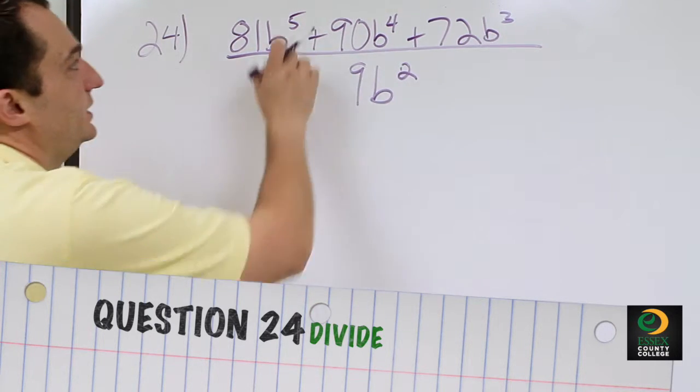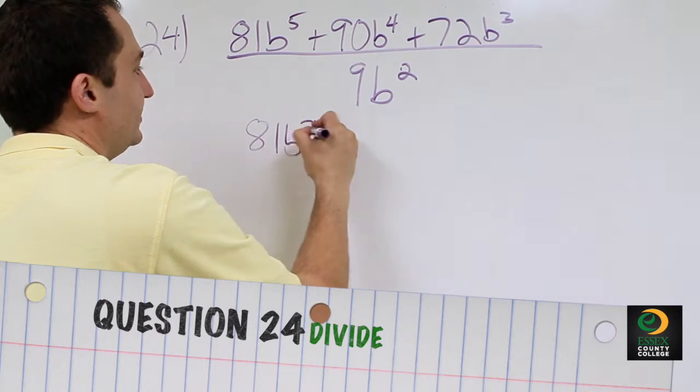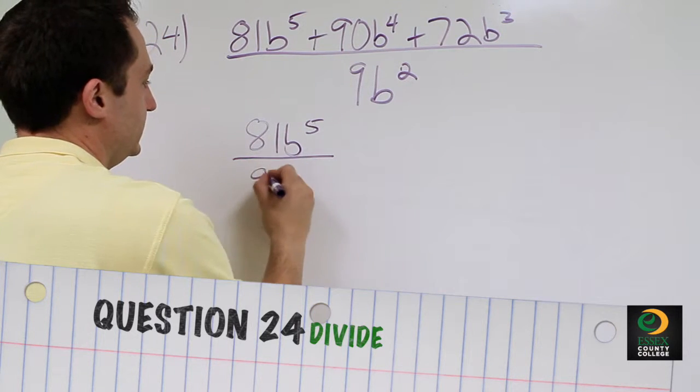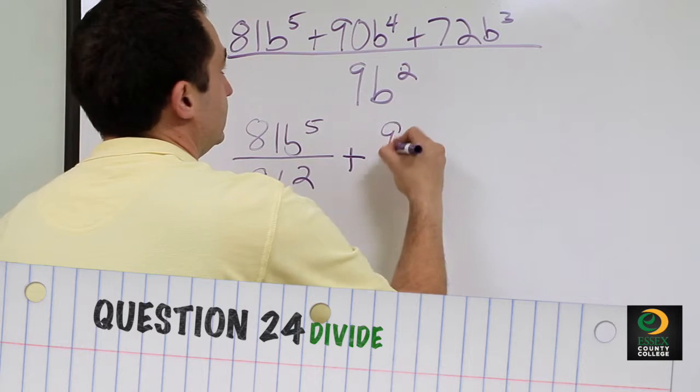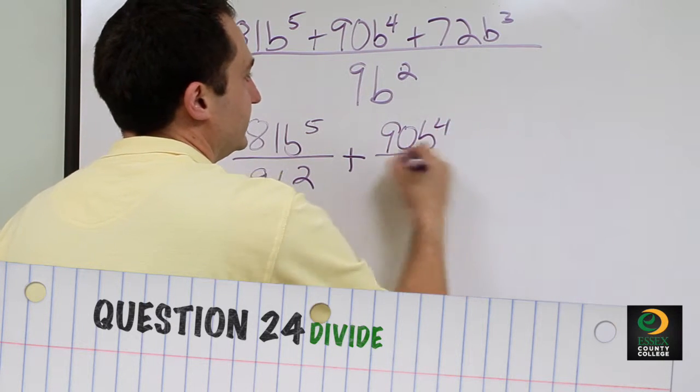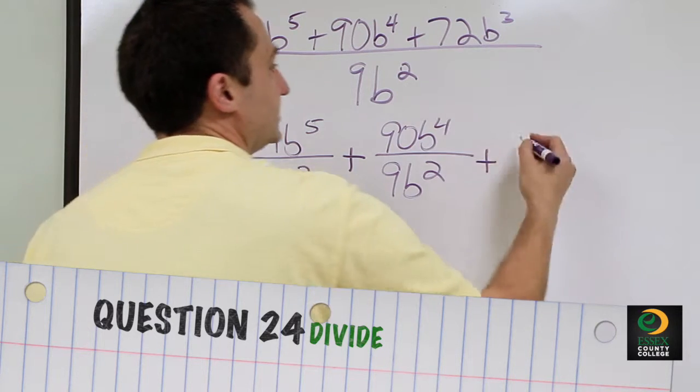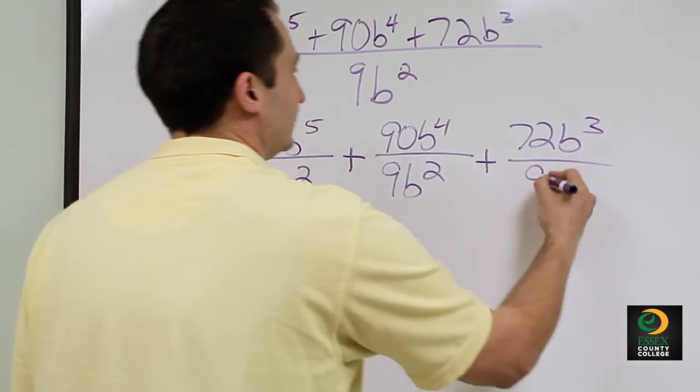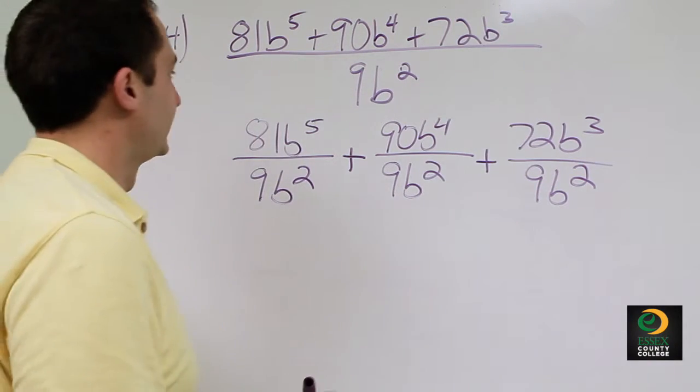So we can do 81B⁵ over 9B² plus 90B⁴ over 9B² plus 72B³ over 9B². Now we're just going to simplify each of these fractions.